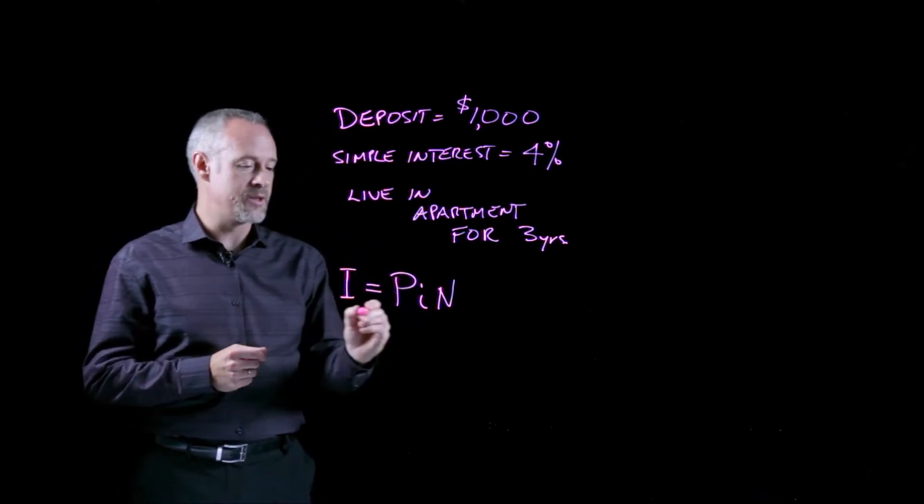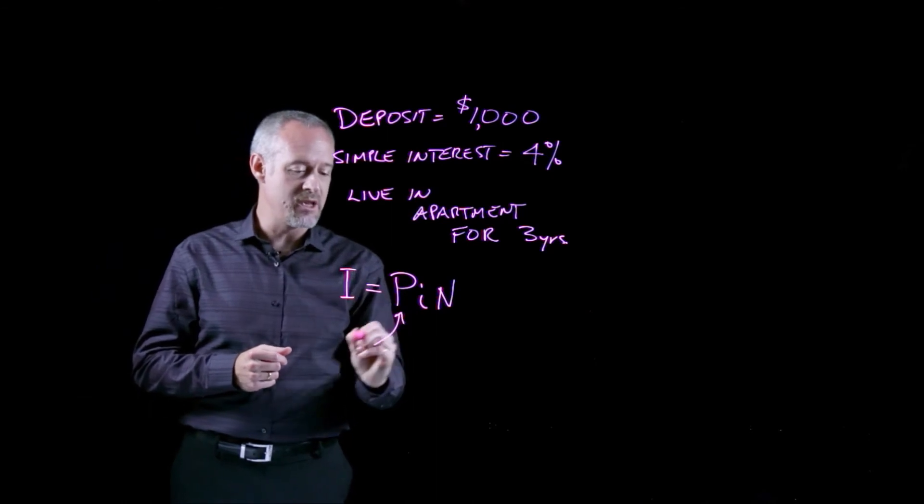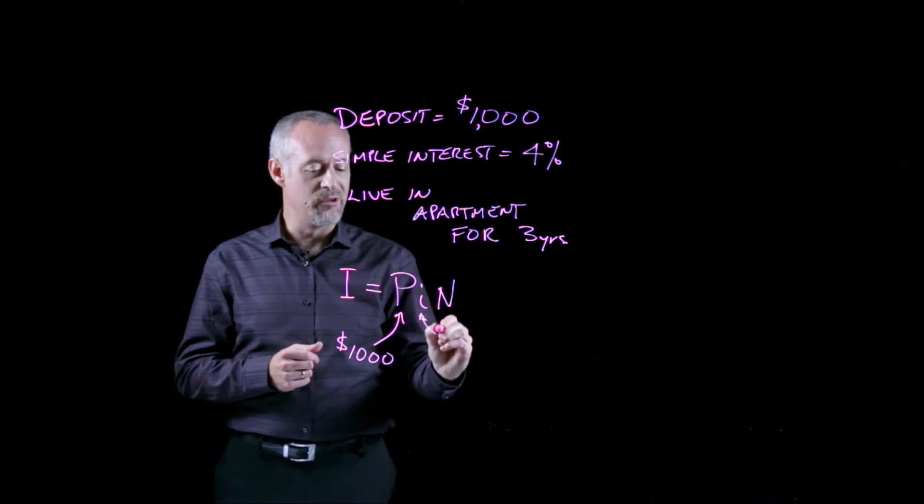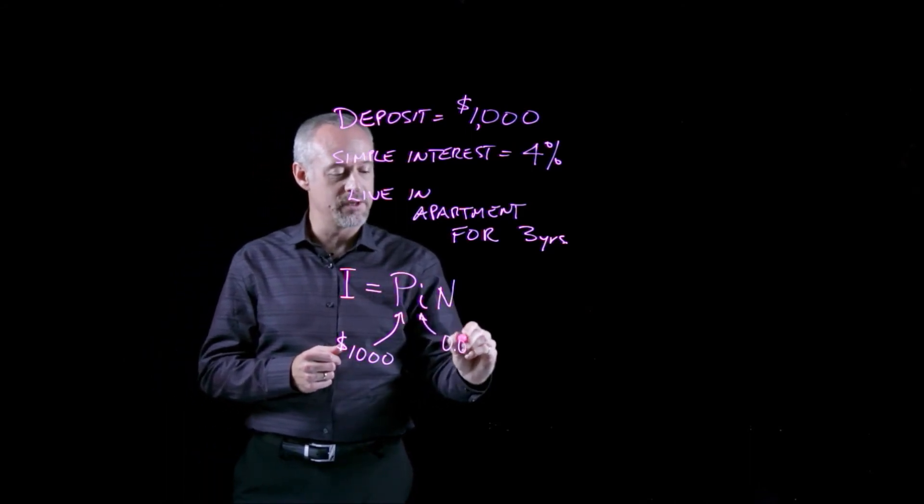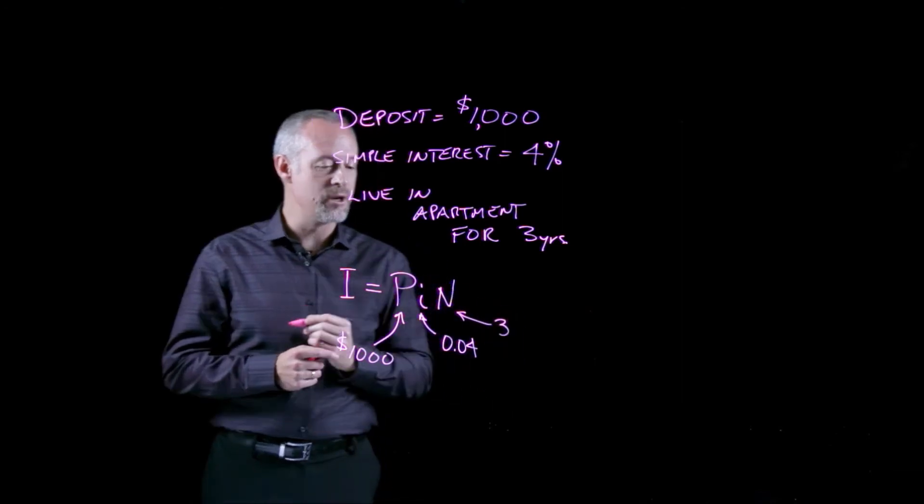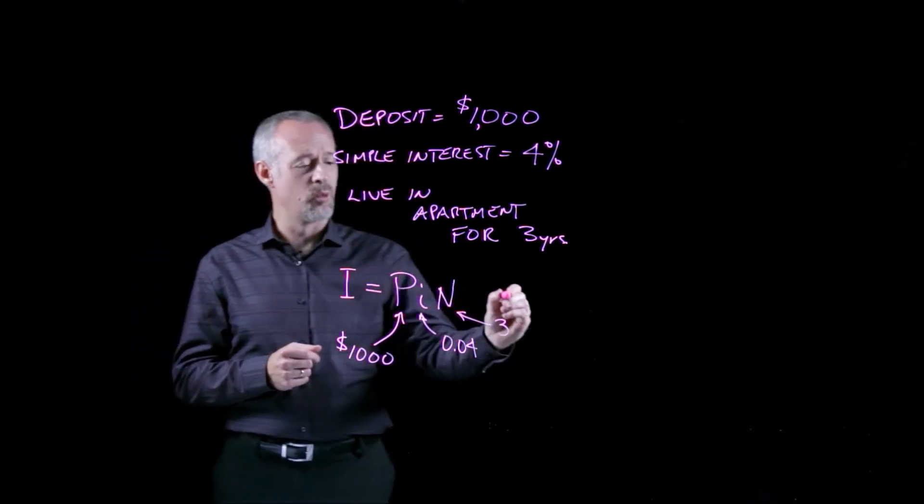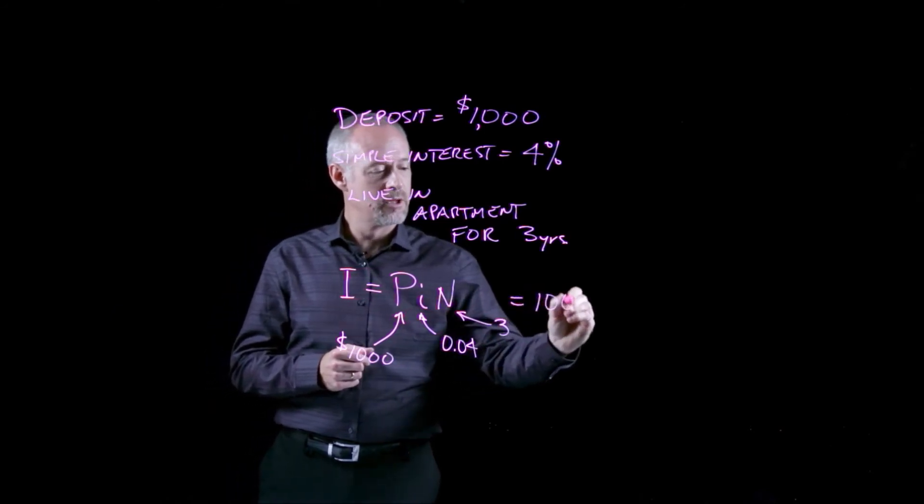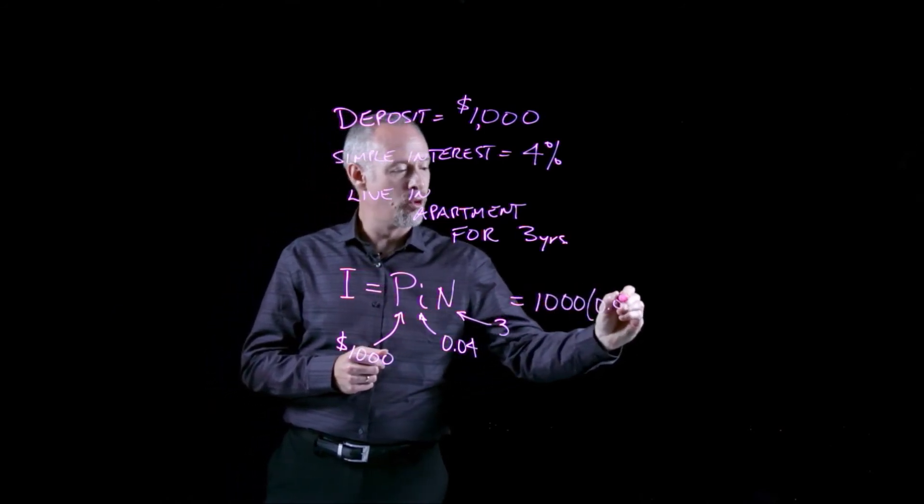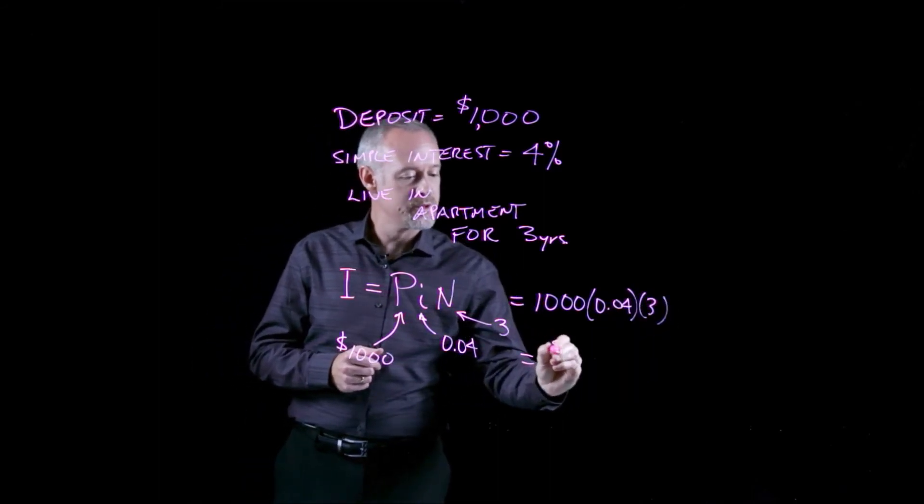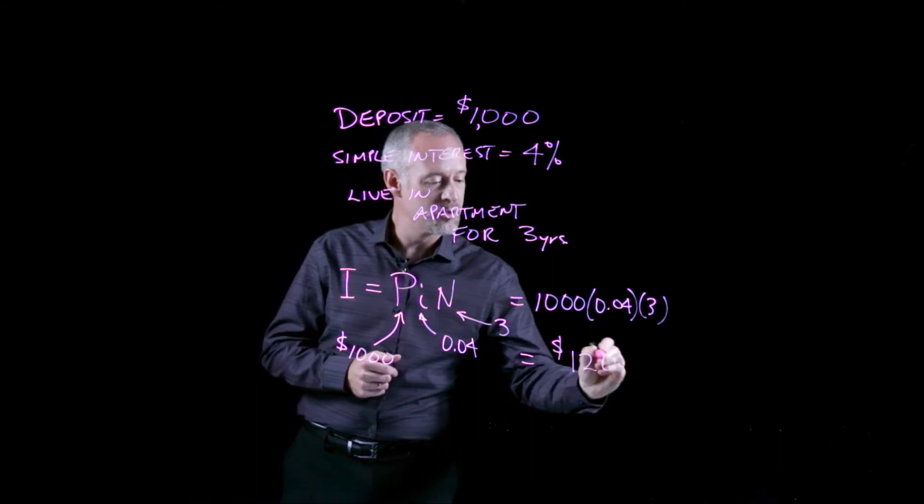So in this particular case, the P will be the $1,000, the i will be the 4%, or 0.04, and the n will be three years. So you can work this out. The $1,000 times 0.04 times three equals $120.